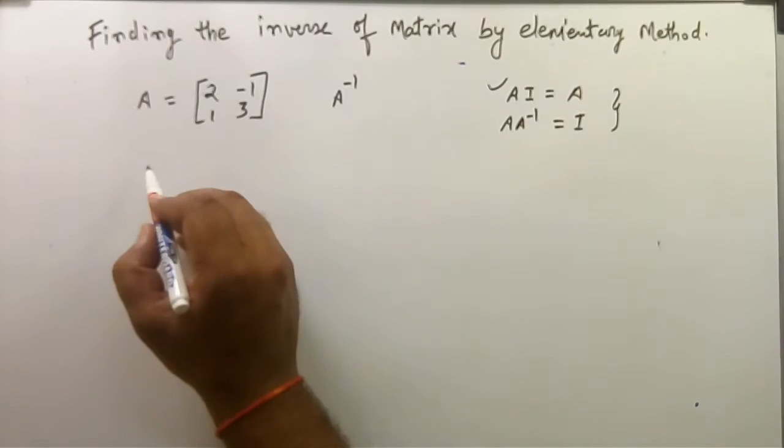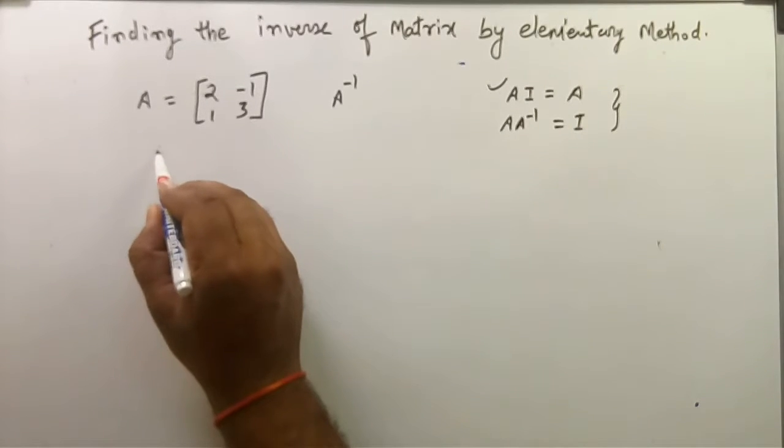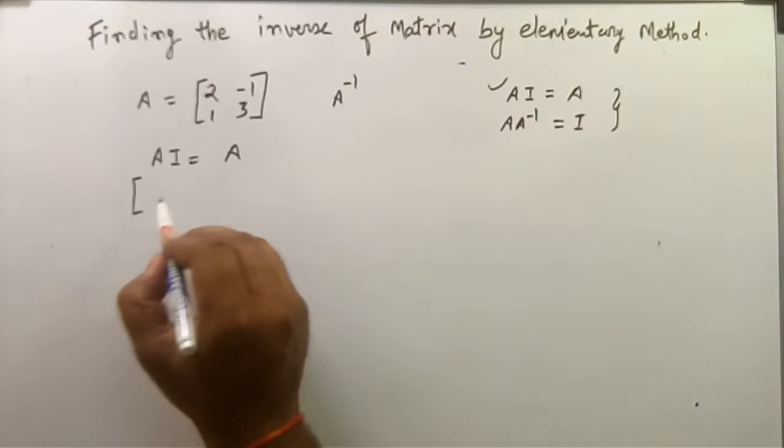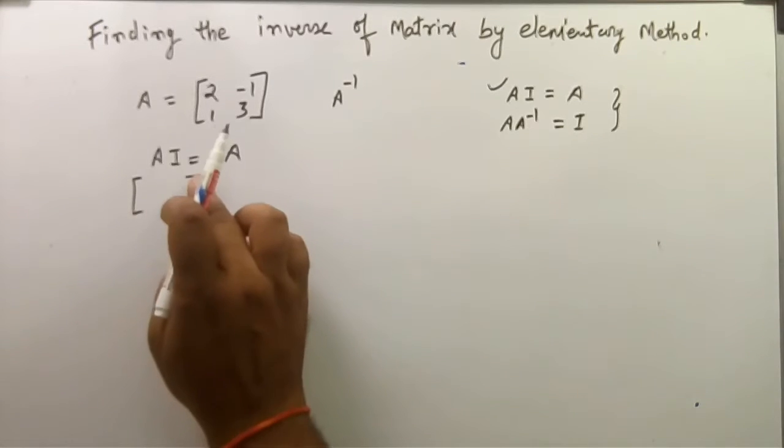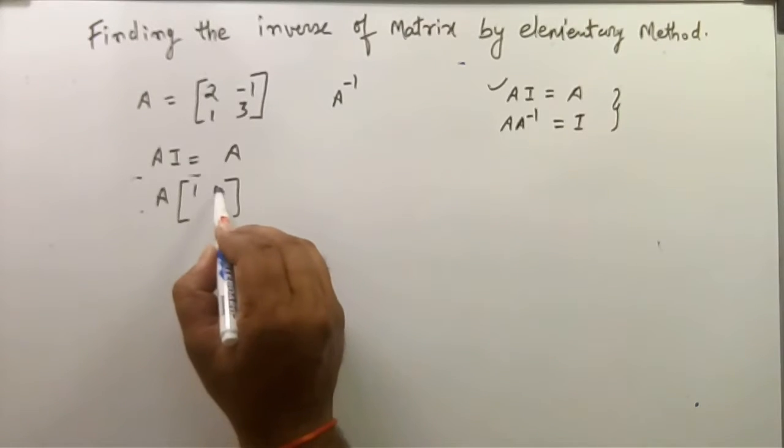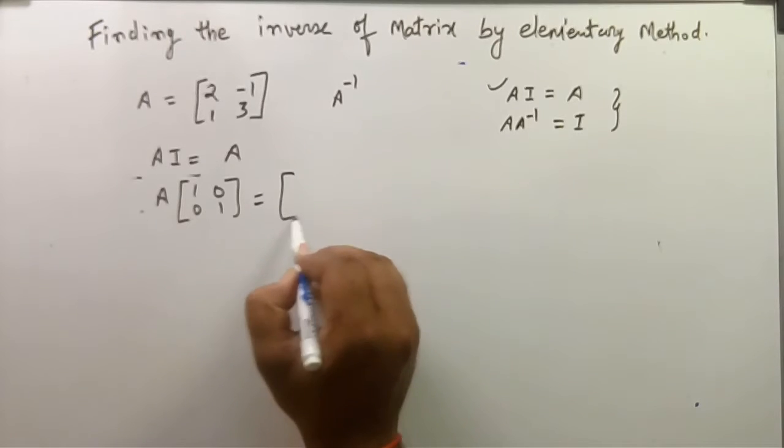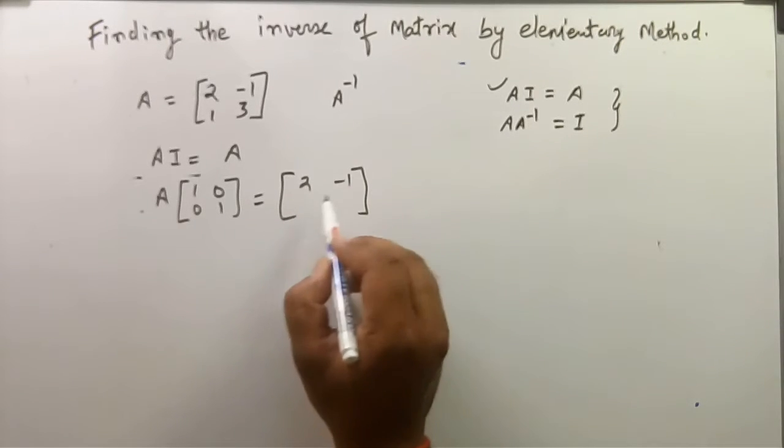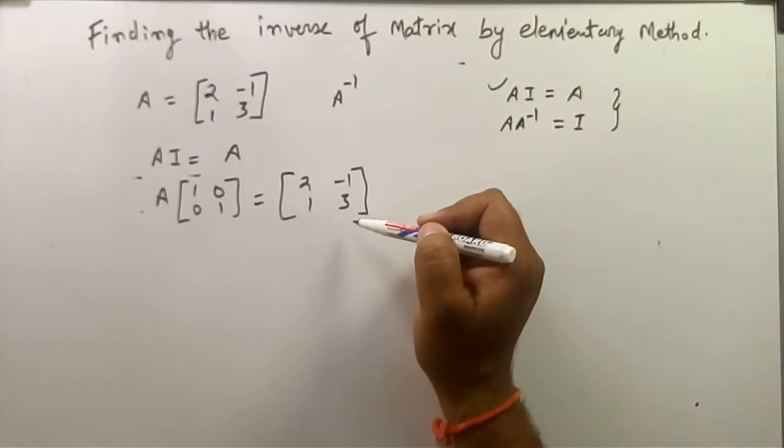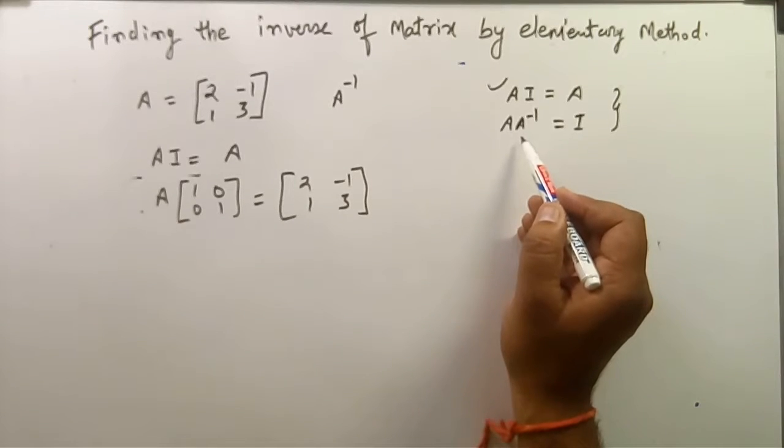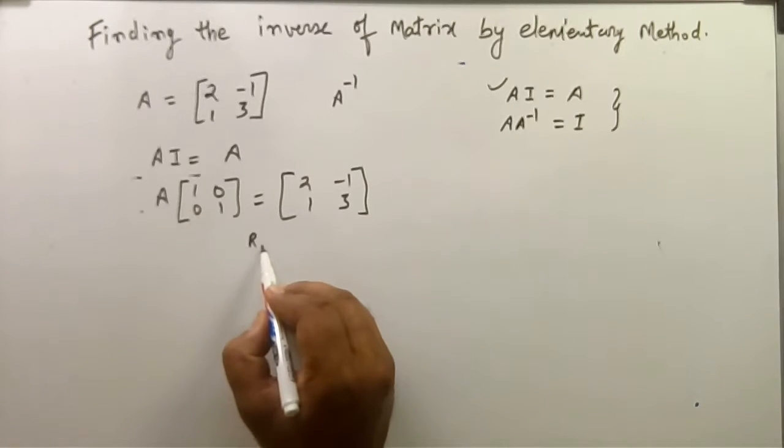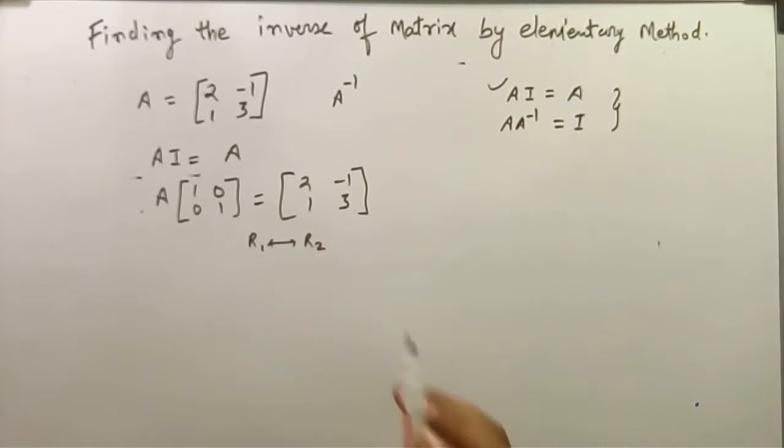We will write this A times I is equal to. So the first operation is to exchange R1 from R2.